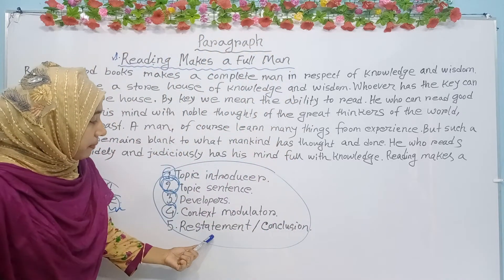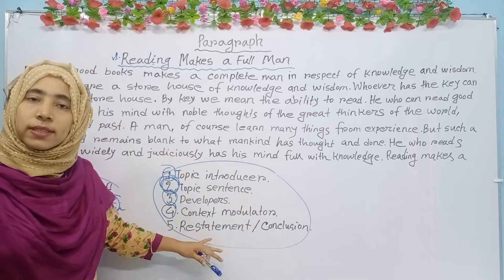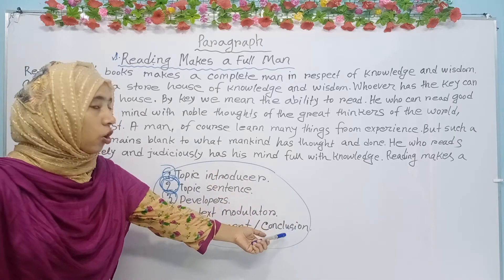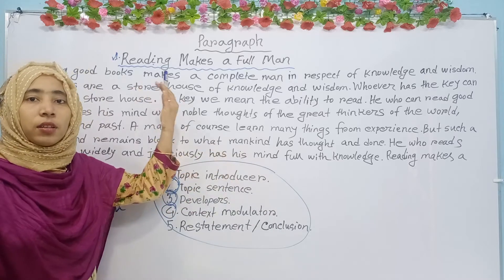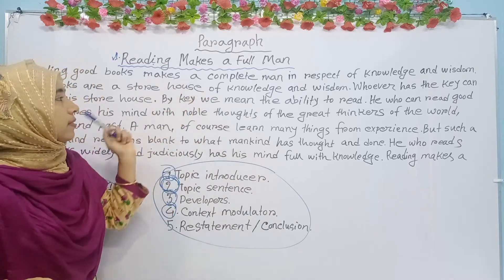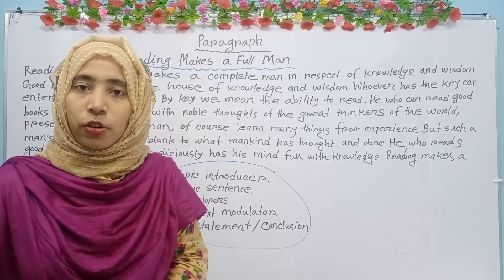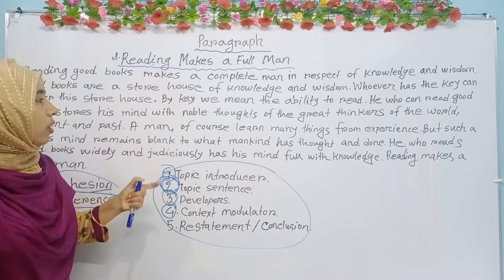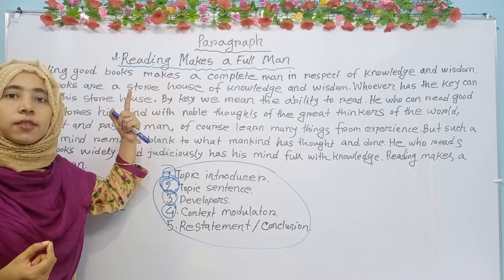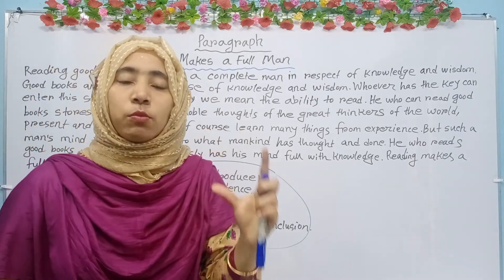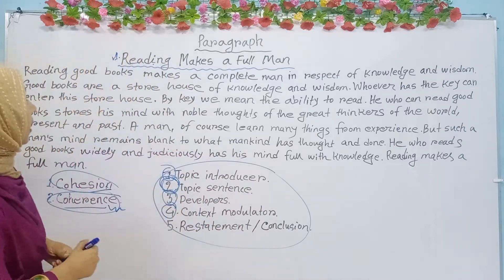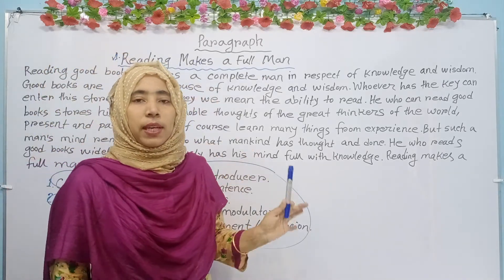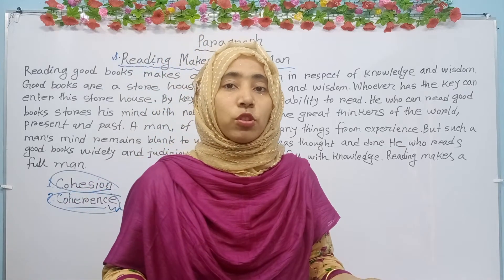And then the last one: restatement or conclusion. What is restatement? Restatement means the conclusion — that means the ending sentence. And the ending sentence, which is the conclusion, will again target the first sentence, that means the topic sentence. Now I will read out the paragraph and then I will tell you which part is the topic sentence, which part is the developer, which part is the modulator, and which part is the conclusion. Here, the topic introduction is 'Reading makes a full man.'